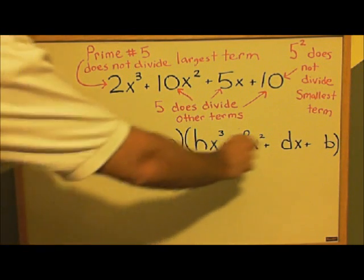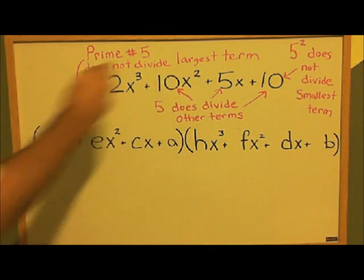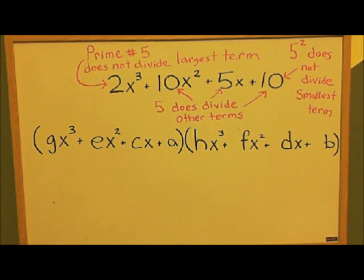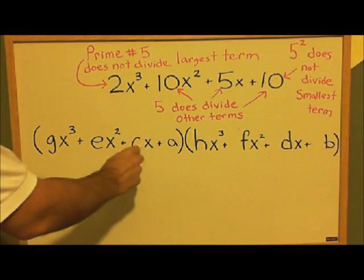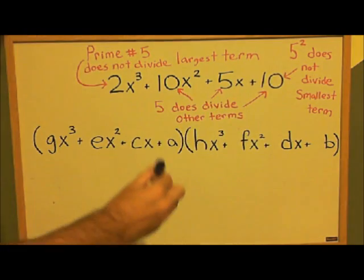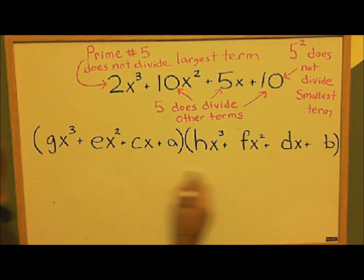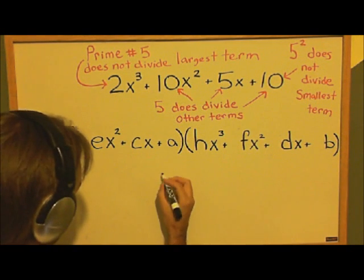If these two polynomials multiplied by each other give us this one, then if we look at the cross multiplication terms which do not contain an x, those are going to have to multiply to equal 10. So we just have a times b equals 10.